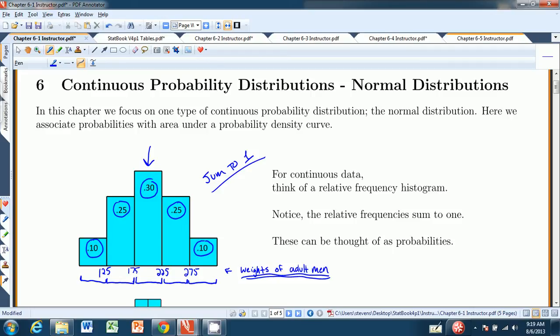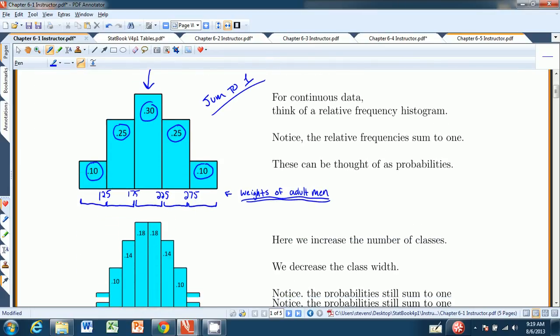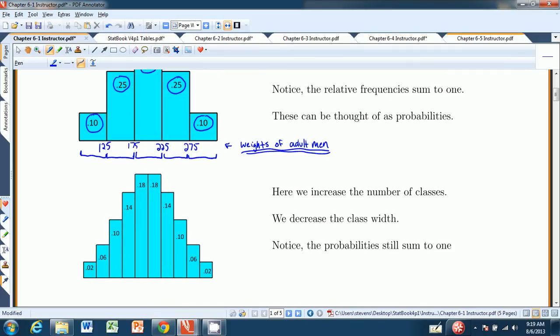Now what we can do, because this is a continuous variable, we can actually refine our class widths. Instead of them being 50 units apart, we can cut that in half, or in third, or in tenths. And what happens to our histogram is that the bars get thinner.